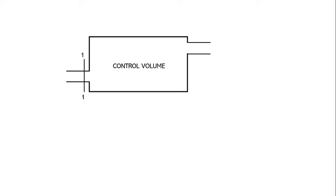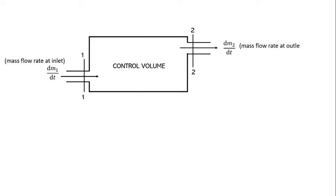The input section is labeled one-one, as shown in the figure, and the output section is two-two. From the input section, a mass of fluid or fluid stream is coming into the control volume, and from the output section, a mass of fluid is going out of the control volume. Let dm₁/dt be the mass flow rate at the inlet and dm₂/dt be the mass flow rate at the outlet.